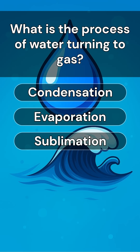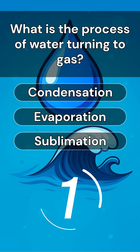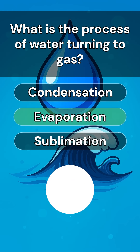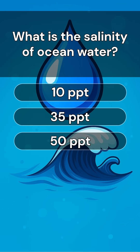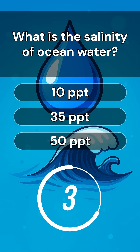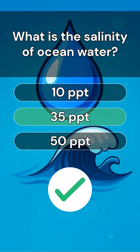What is the process of water turning to gas? Answer is evaporation. What is the salinity of ocean water? Answer is 35 PPT.